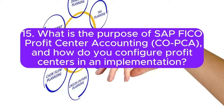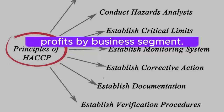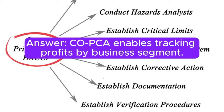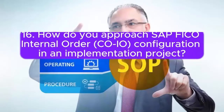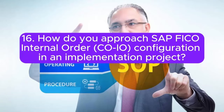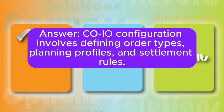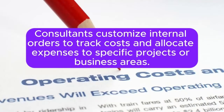Question 15: What is the purpose of SAP FICO Profit Center Accounting (CO-PCA), and how do you configure profit centers in an implementation? CO-PCA enables tracking profits by business segment. Consultants configure profit centers by defining standard hierarchies, profit center groups, and assigning relevant cost and revenue elements. Question 16: How do you approach SAP FICO Internal Order (CO-IO) configuration in an implementation project? CO-IO configuration involves defining order types, planning profiles, and settlement rules. Consultants customize internal orders to track costs and allocate expenses to specific projects or business areas.